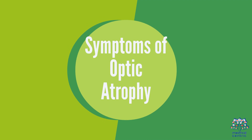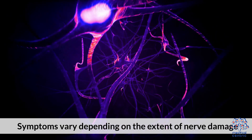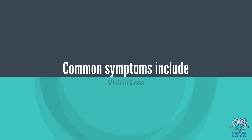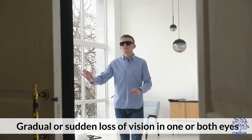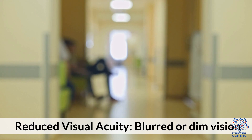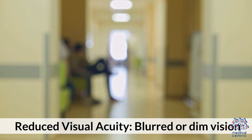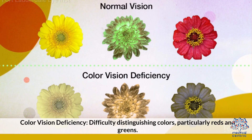Symptoms of Optic Atrophy. Symptoms vary depending on the extent of nerve damage. Common symptoms include: 1. Vision loss — gradual or sudden loss of vision in one or both eyes. 2. Reduced visual acuity — blurred or dim vision. 3. Color vision deficiency — difficulty distinguishing colors, particularly reds and greens.